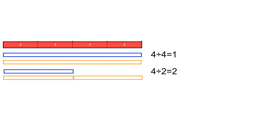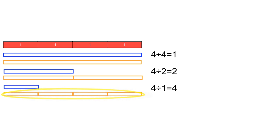If we take four and divide by one, we should have, as expected, four. So now the question is what happens when we divide by a fraction? So if we take four and divide by one half, let's use the previous questions to think about what we're asking. When we divide four by four, we are asking how many pieces of length four fit into four — and that's one. When we divide four by two, how many pieces of length two fit into four — and that's two. And when we divide four by one, how many pieces of length one fit into four — and that's four.